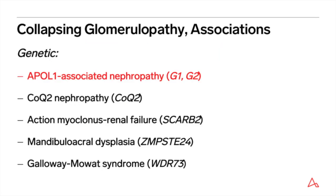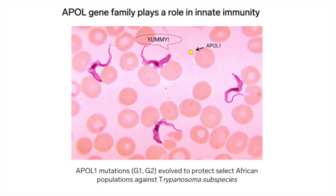Regarding genetic associations, the APOL1 gene appears to play a major role in the pathogenesis of CG. It has been known for some time that CG has a strong predilection for descendants from Western Sub-Saharan Africa, including African Americans. The link resides within specific mutations of the APOL1 gene that evolved some 10,000 years ago as a defense mechanism against certain subspecies of trypanosome. Trypanosomes are protozoan parasites that affect both humans and animals in poor rural areas of Sub-Saharan Africa. The parasites are transmitted by the tsetse fly, and infection of the host results in sleeping sickness.